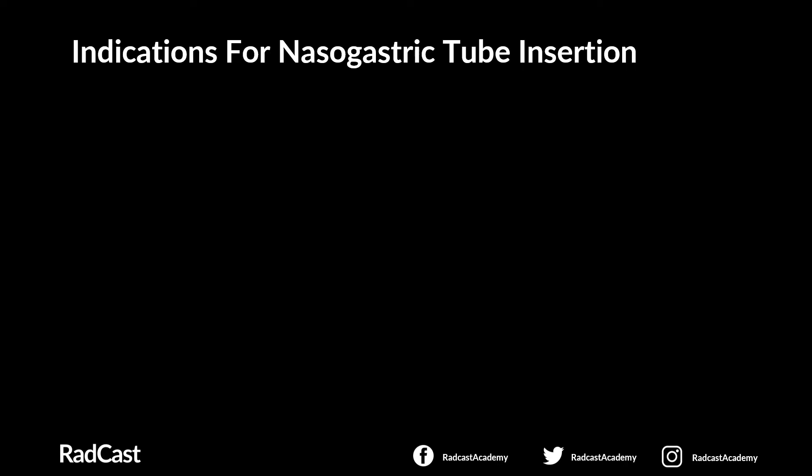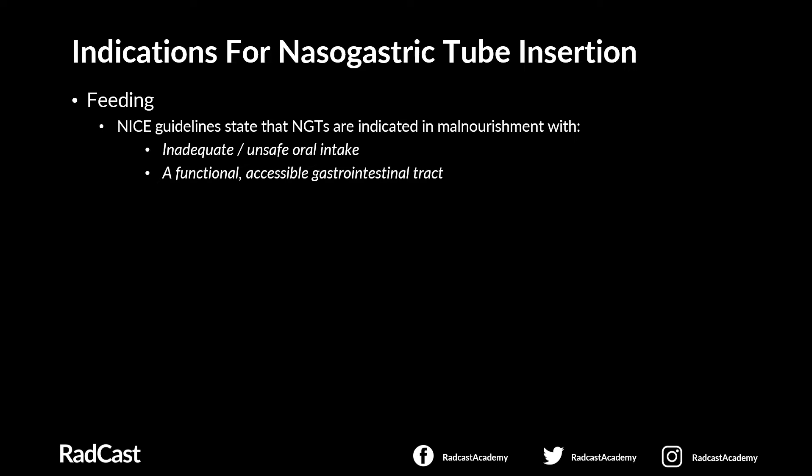There are a number of indications for the use of NG tubes. One of the main ones is for feeding. NICE guidelines state that NG tubes are indicated in patients who are malnourished or at risk of malnourishment who have an inadequate or unsafe oral intake and a functional accessible GI tract. Examples include neurological conditions causing dysphagia such as stroke, patients with a low GCS, and preparation of malnourished patients for major abdominal surgery. NG tube feeding is generally only advised for up to four weeks, after which the aim is oral feeding or a PEG.